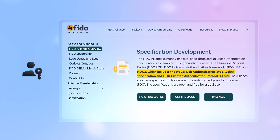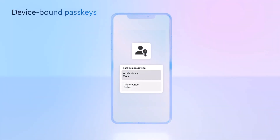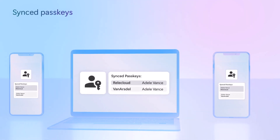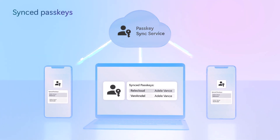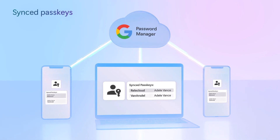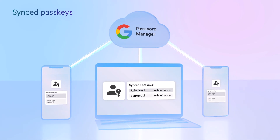Under the hood, passkeys are built on FIDO2 standards and use public key cryptography. They can either be device-bound passkeys, which limit portability and keep all credentials local on the device, or sync passkeys, which work across devices using a centralized cloud service offered by platform providers like Apple's iCloud Keychain or Google Password Manager and others. So passkeys are a huge improvement over MFA credentials that can be phished, and they simplify secure authentication.